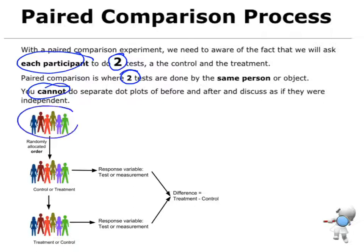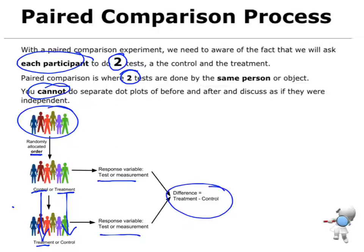We start off by having a group of people, and we randomly allocate the order — are they going to do the control group first or the treatment group first? Then we do the test. Then the same group of people all do the opposite: if they had been doing the treatment group, they now switch to doing the control group, and vice versa. We collect the test results, find the difference, and analyze those differences.